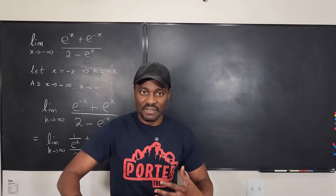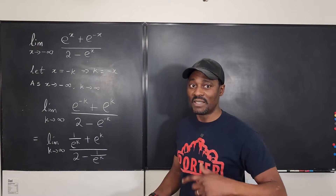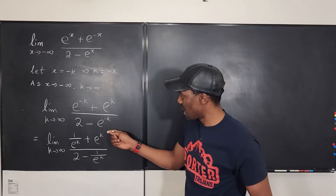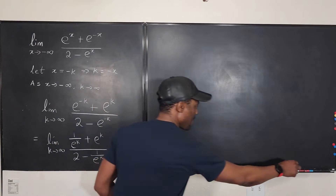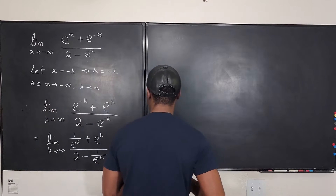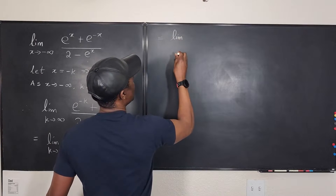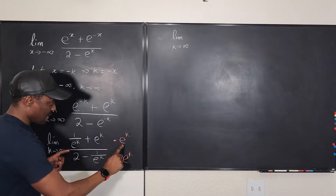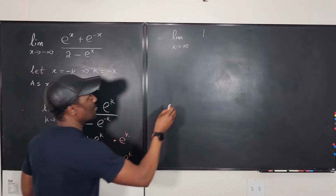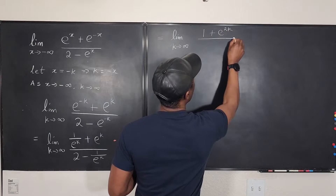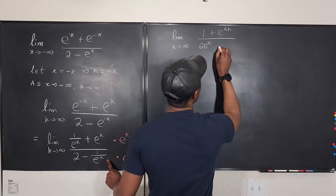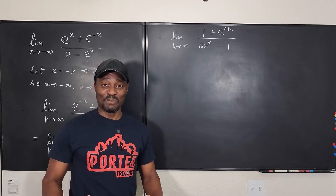Let's simplify this. This is going to be equal to the limit as k goes to infinity of 1 over e to the k, plus e to the k, divided by 2 minus 1 over e to the k. Now when you have a complex fraction — a fraction within a fraction — all you want to do is multiply the top and bottom by the denominators that you see. The denominator here is e to the k, and it's also e to the k, so I'm going to multiply the top and bottom by e to the k. This gives us the limit as k goes to infinity of: multiplying gives 1, then e to the 2k, plus e to the 2k — wait, that's 2e to the k — and in the denominator 2 times e to the k, minus 1. So now we have a cleaner expression to work with.